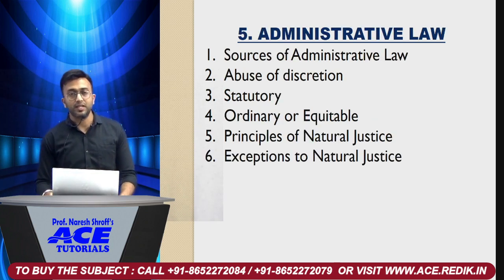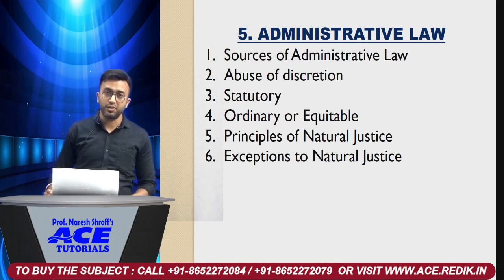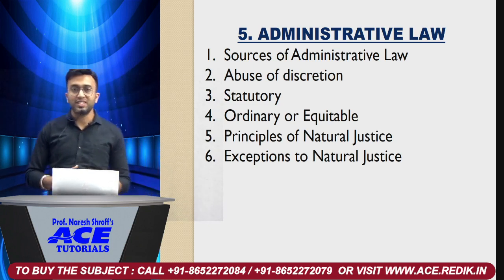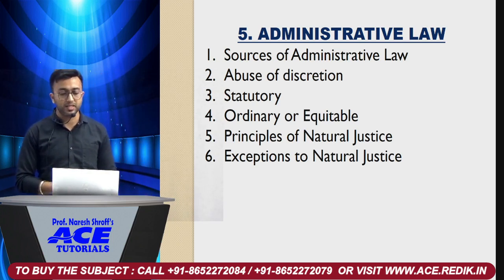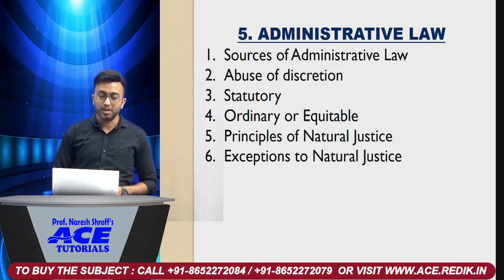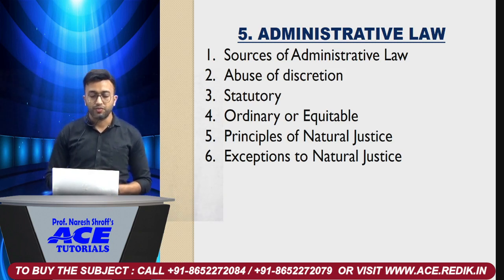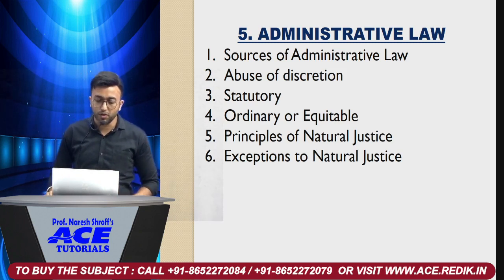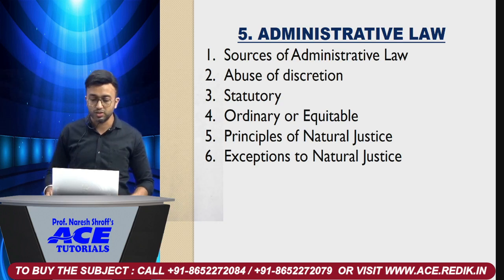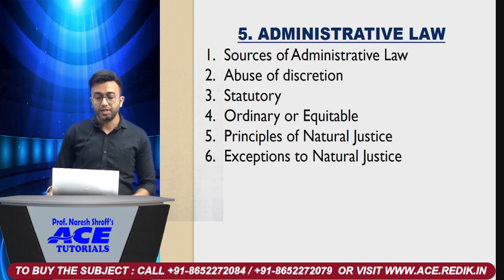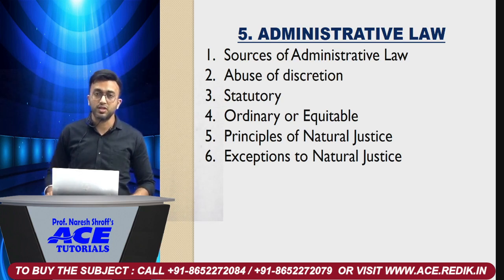The fifth chapter is Administrative Law. This chapter's weightage is not as high as the Constitution of India, but it is still an important account. The topics are: sources of administrative law, then abuse of discretion, then statutory matters — which will get you some points. Then ordinary and equitable, and then the principle of natural justice and exceptions to natural justice. If you prepare these questions, you will do well in this chapter.